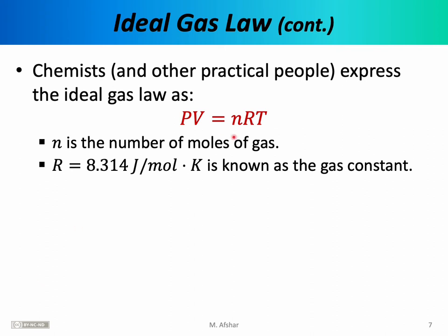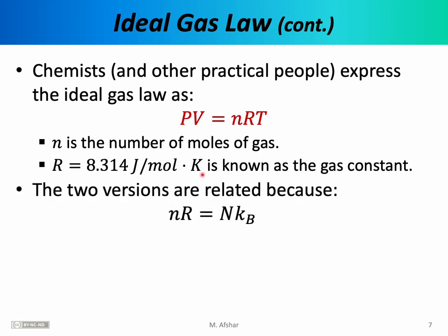The ideal gas law is often expressed in a slightly different form. Chemists and most other practical-minded people often express the ideal gas law as PV = nRT, where we use lowercase n to denote the number of moles of gas. R is known as the gas constant, and it is approximately equal to 8.314 joules per mole per kelvin. The two versions of the ideal gas law are equivalent, simply because the number of moles times the gas constant equals the number of particles times the Boltzmann constant.